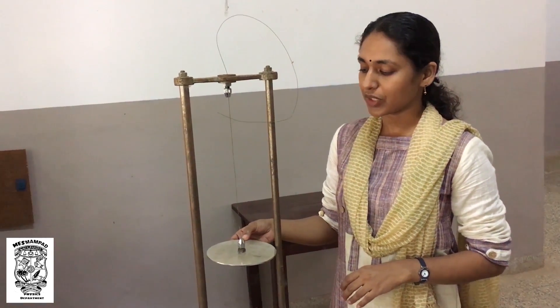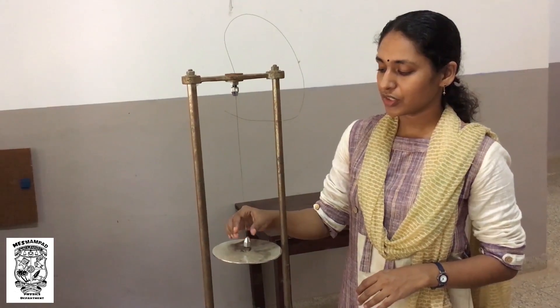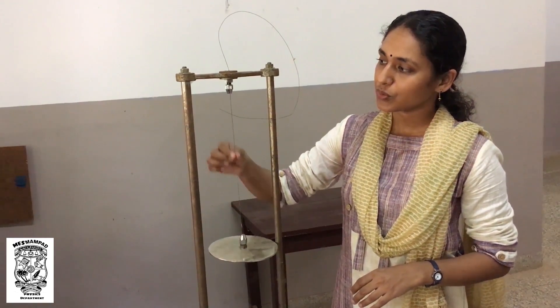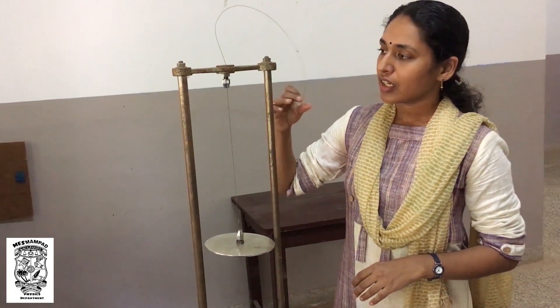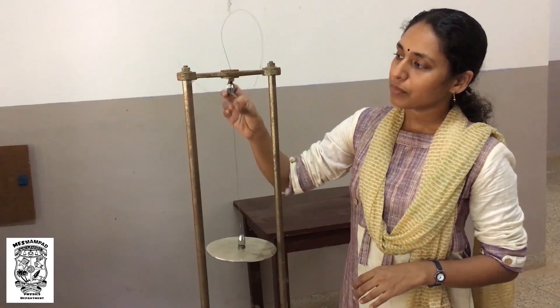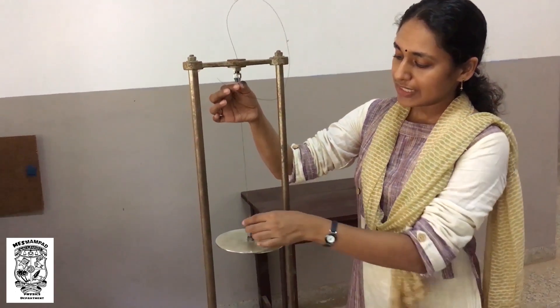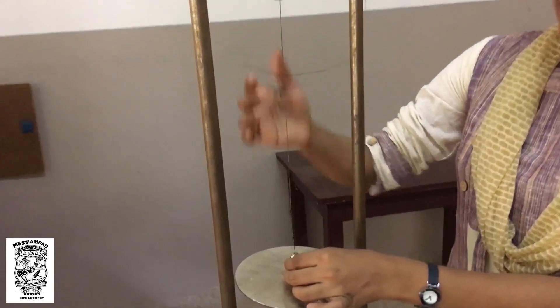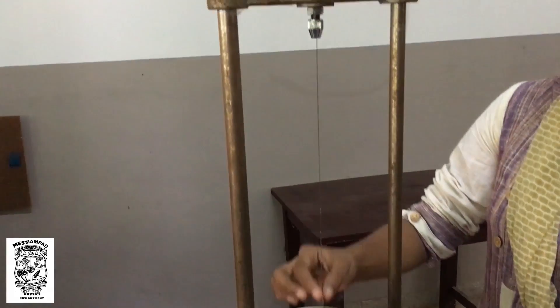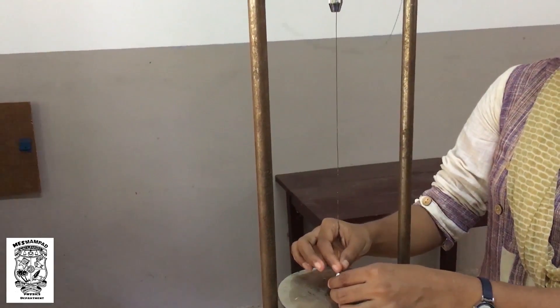We have to determine the rigidity modulus of the material of a given wire using a torsion pendulum. The length of the torsion pendulum and the length of the wire will be held in these two chucks.